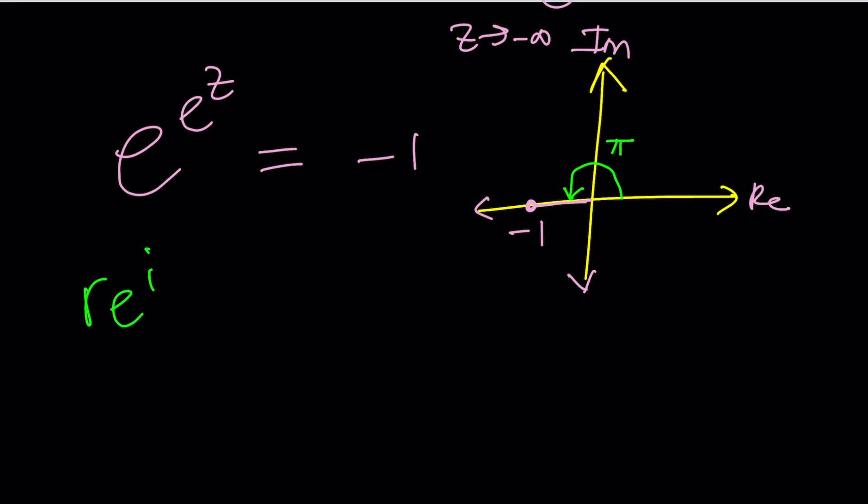So where do we go from here? R e to the i theta. Modulus is one, by the way, so you don't need to worry about it. We can basically write negative one as e to the power i pi. But i pi, or pi, is not the only argument. It's just the principal value. So we're allowed to add multiples of 2 pi, where n is an integer. Zalen. That's where it comes from. My viewers told me that.